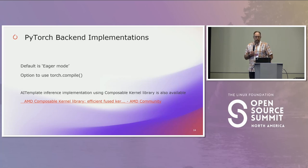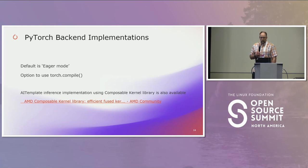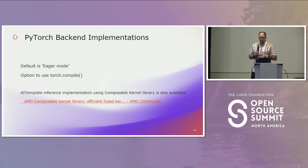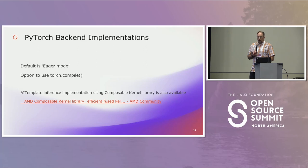On the backend implementation side, there's eager mode, and with the new `torch.compile` in PyTorch 2.0 that's available as well — it uses the OpenAI Triton implementation. We've also worked with the AI Template library, where a Composable Kernel component plugs in and gives some of the best inference performance for the Instinct GPUs. There's a nice blog post linked in the slides with all the details, covering the ROCm side on both the Instinct (CDNA) and Radeon (RDNA) devices.